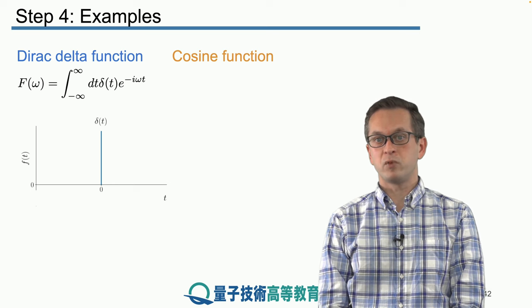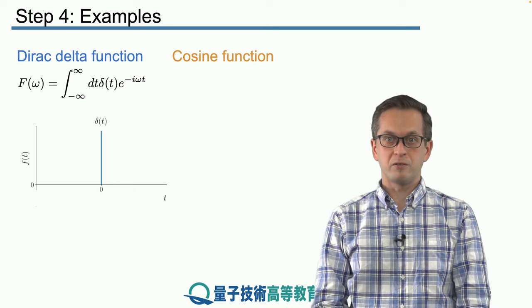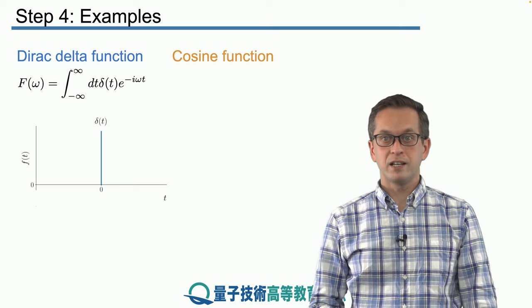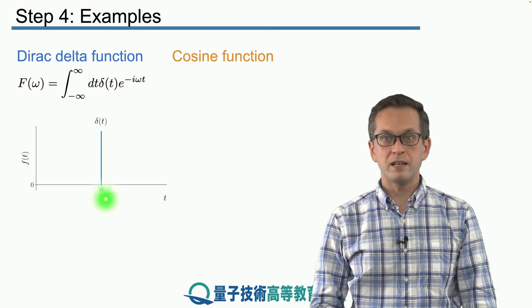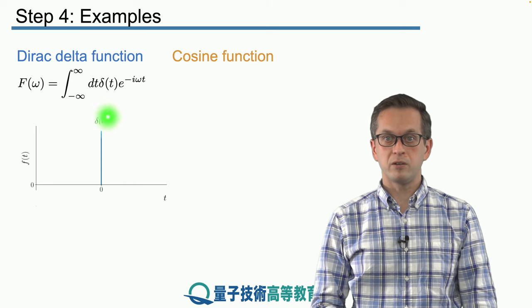So what is the Fourier transform of Dirac delta function? Just to remind you, the Dirac delta function delta t is 0 everywhere except for when the argument t is equal to 0. And there you've got a spike.